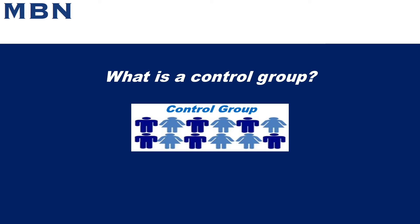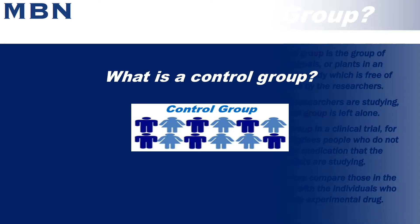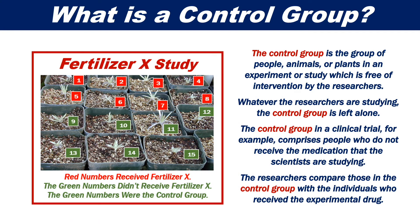What is a control group? The control group is the group of people, animals or plants in an experiment or study which is free of intervention by the researchers. Whatever the researchers are studying, the control group is left alone.